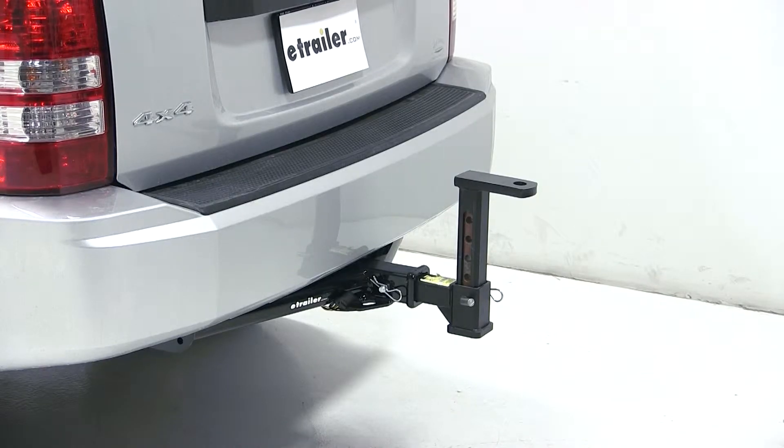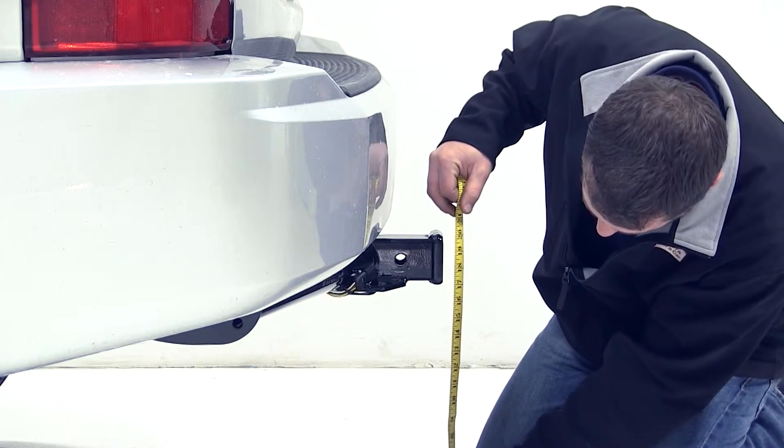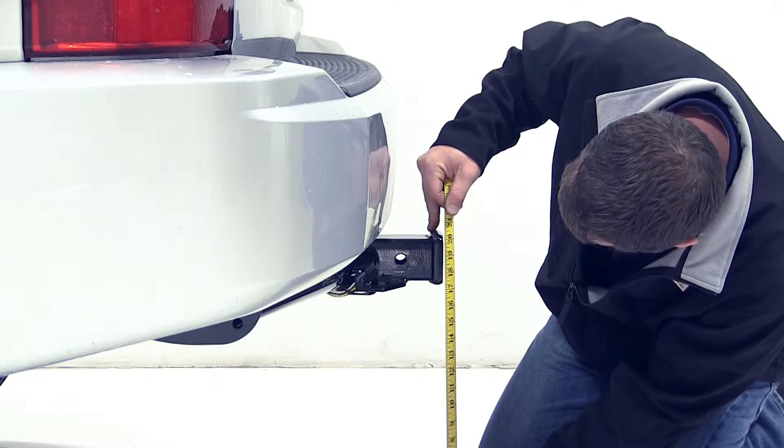Before installing our ball mount, we'll first need to get our hitch height measurement. This is the measurement from the inside top edge of the receiver tube to the ground. On our vehicle that measurement is 20 inches.